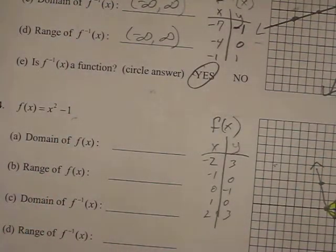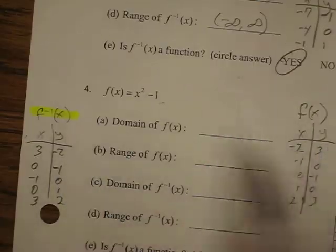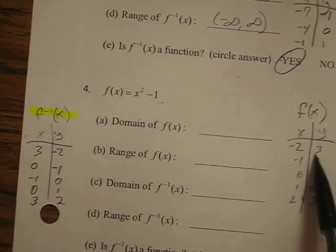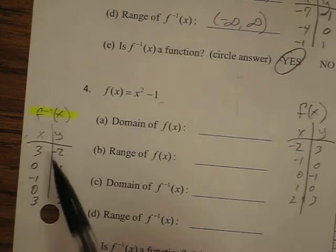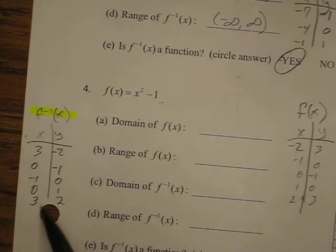Then, once you get those points, you get the inverse table, which I highlighted, by switching x and y. So negative 2, 3 is now 3, negative 2. And you do that all the way down the table. 2, 3 becomes 3, 2.